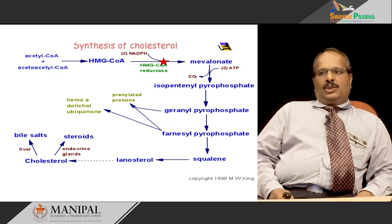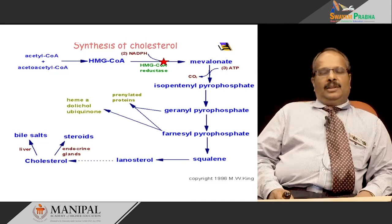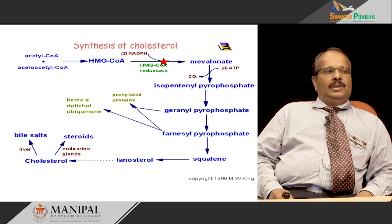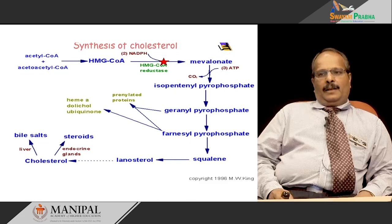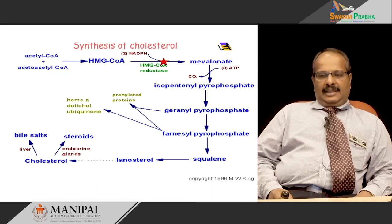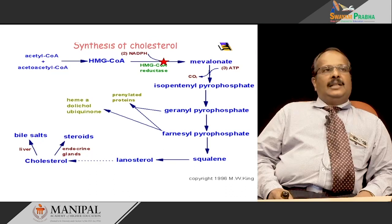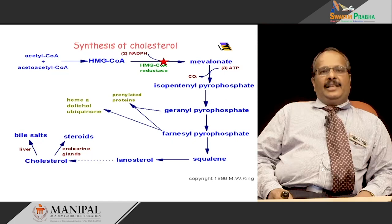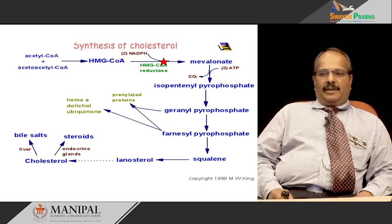Farnesyl pyrophosphate is a very important intermediate of cholesterol biosynthesis and is also involved in the formation of heme A, dolichol, and ubiquinone, which are important biological compounds with vast varieties of functions in the body. Two molecules of farnesyl pyrophosphate condense to form 30-carbon squalene. In the next step, squalene cyclizes to form lanosterol, which then undergoes multi-step reactions to form cholesterol.